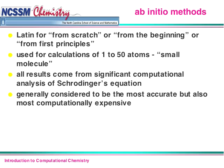It's getting better though, and all the results come from significant computational analysis of Schrödinger's equation, which we'll start talking about next week. Ab initio is considered the most accurate method, but also the most computationally expensive — meaning it takes a lot of computing time to get an answer.